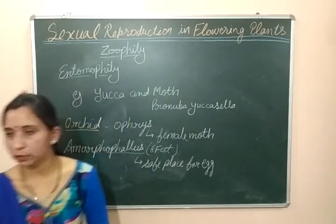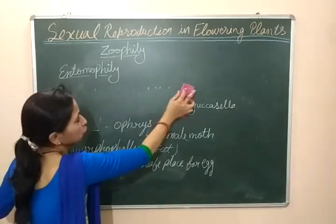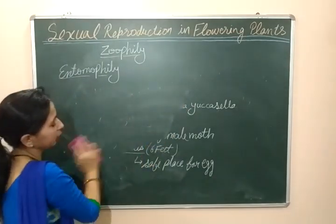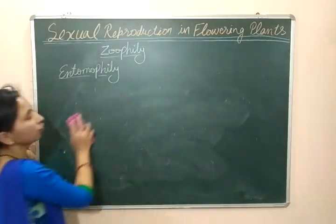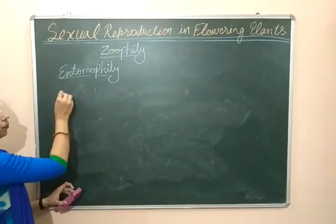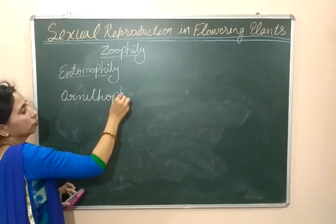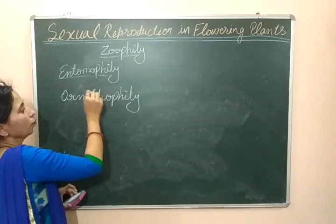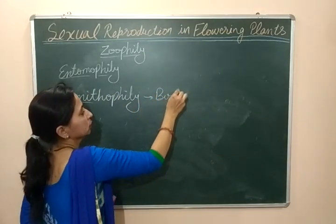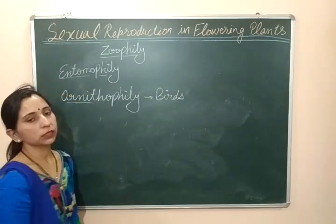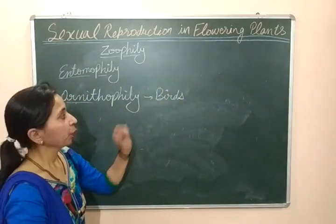The next type of pollinating agency that we will discuss is ornithophily. When birds are used as pollinating agents, then pollination is known as ornithophily.